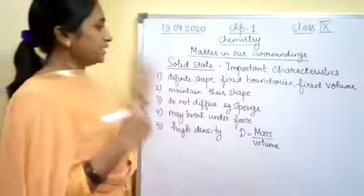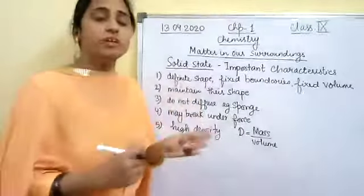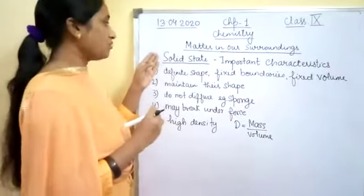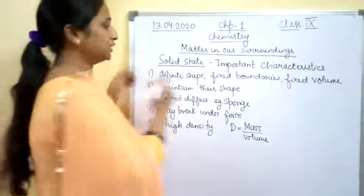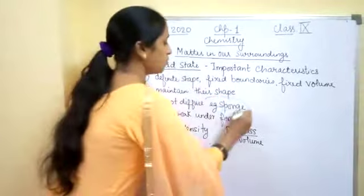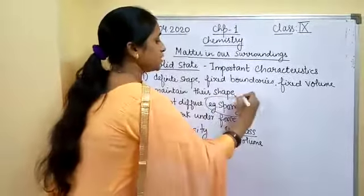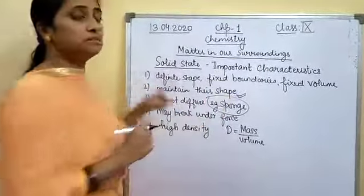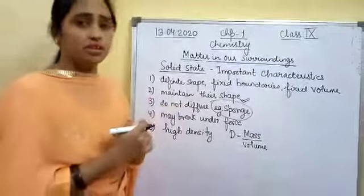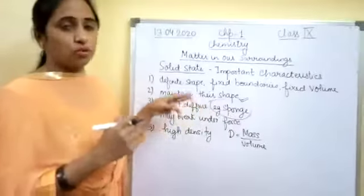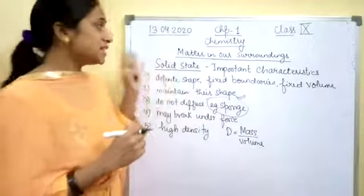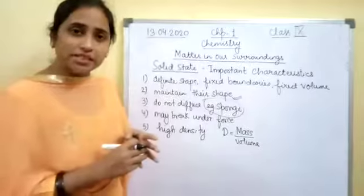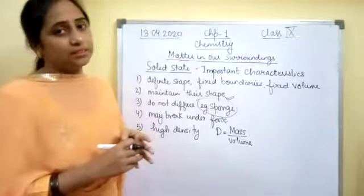In the next lecture, we will be studying some more important characteristics of the solid state. The sponge example is asked several times in exams, so be specific and learn the reasoning for it. Students, stay at home, study thoroughly from your NCERT textbook. Thank you.